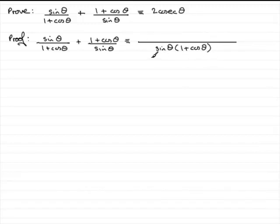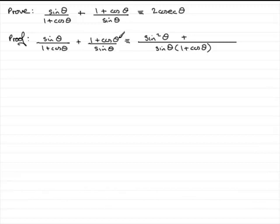For the first fraction, multiplying the bottom by sine theta gives us the common denominator, so we multiply the top by sine theta too, giving sine squared theta. For the second term, multiplying the bottom by 1 plus cos theta gives the common denominator, so we multiply the top by 1 plus cos theta as well — and since we've already got a 1 plus cos theta there, we end up squaring it: 1 plus cos theta squared.